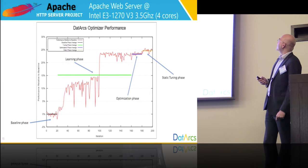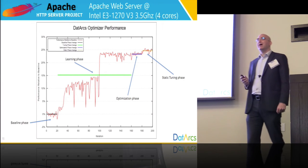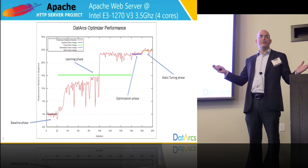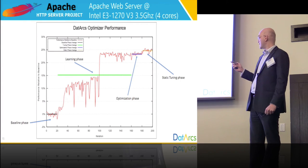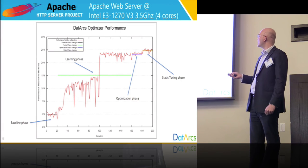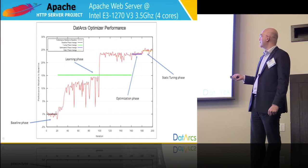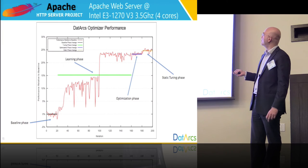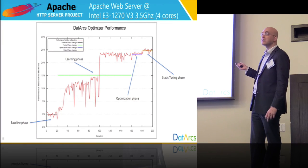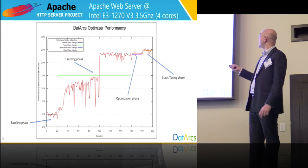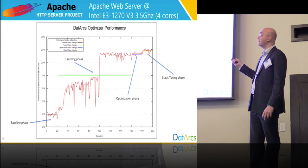And the fourth stage is the static phase — optimizer applies whatever optimal settings it found during the learning phase and then exits. There's no dynamic tuning; it's just static tuning. From that point on, optimizer is not in memory and not consuming any more CPU cycles. It's like manual tuning. Here we get 8.8%. That's the same experiment run on a different server — not Packet — and we can see more or less the same results, gradually improving and then jumping to around 25%.